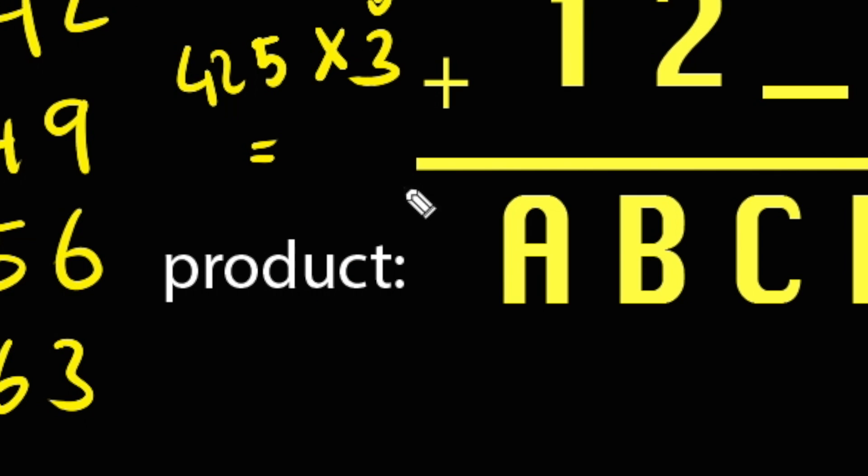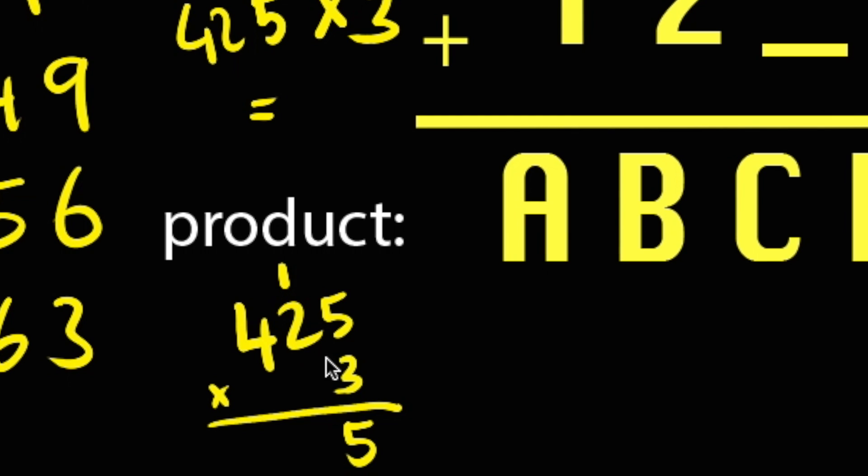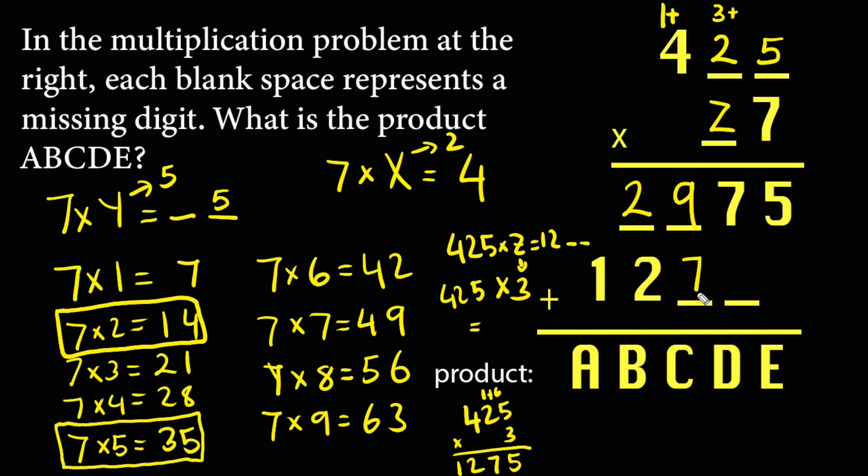425 times 3: three times five is 15, one carried over. Three times two is six plus one equals seven. Three times four is 12. Our number here is 1275. Now we add these numbers. Five goes down directly, so I'm going to write below the letters.